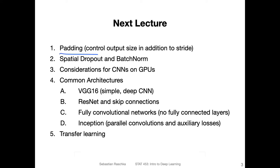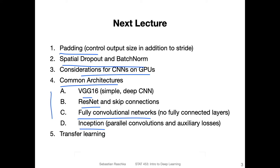So next week we will talk about padding, then special versions of dropout and batch normalization that work with convolutional networks, some considerations for training CNNs on GPUs, and then common architectures like VGG-16, residual networks, fully convolutional networks, and inception. There are maybe 50 more architectures we can't cover, but these are still the main ones. And then I will also show you how transfer learning works.